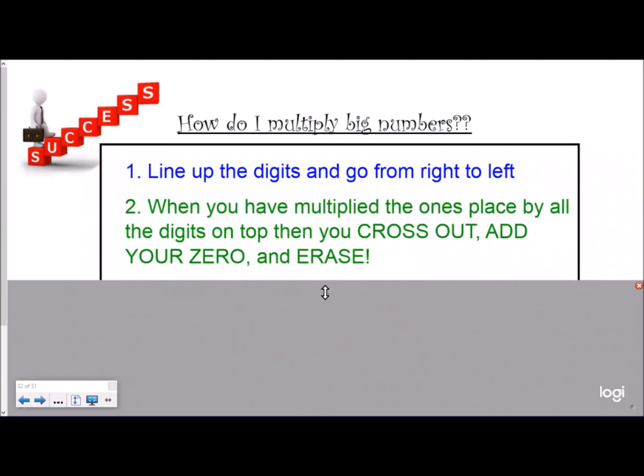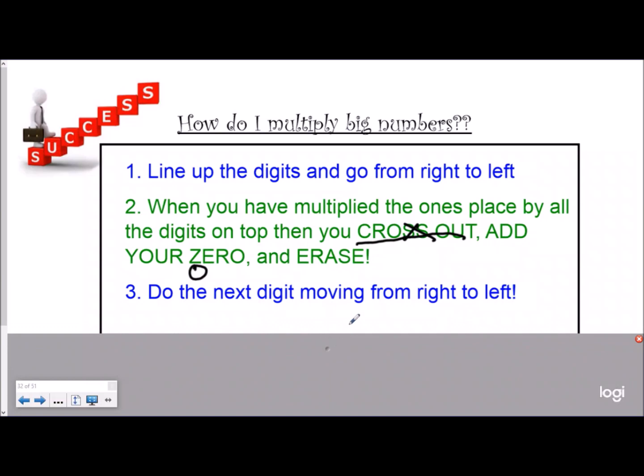When you have multiplied the ones place by all digits on the top factor, you cross out, add your zero, and erase anything that you have already carried or regrouped. Then you do the next digit moving from right to left.